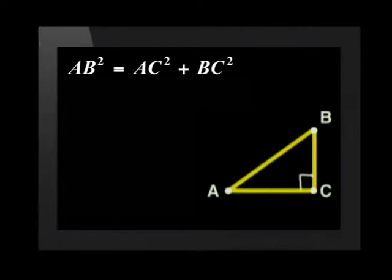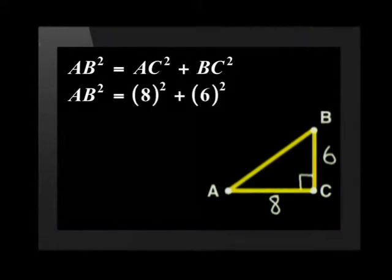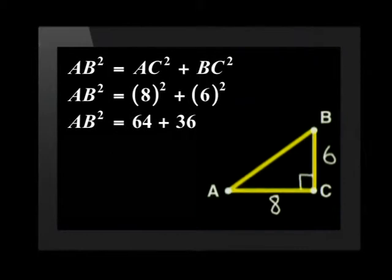AB squared equals AC squared plus BC squared. Suppose I give you AC equal to 8 and BC equal to 6. We substitute into Pythagoras' theorem and square the brackets. AC is 8 and BC is 6, so AB squared is equal to 64 plus 36. AB squared is equal to 100.